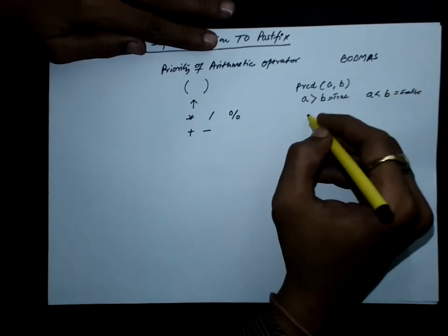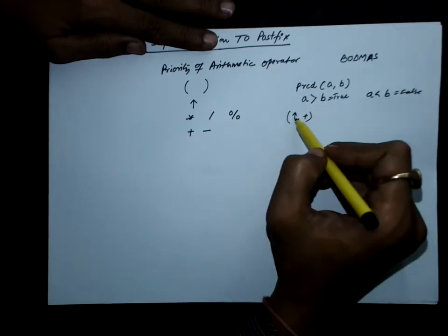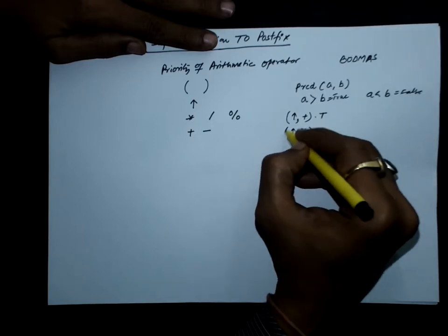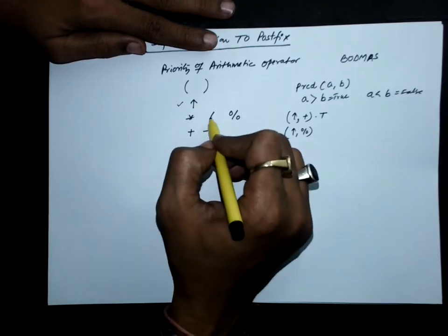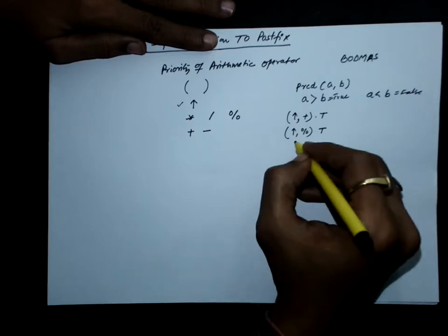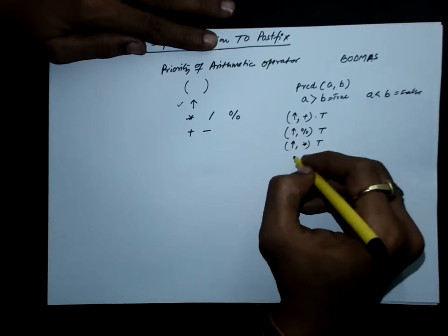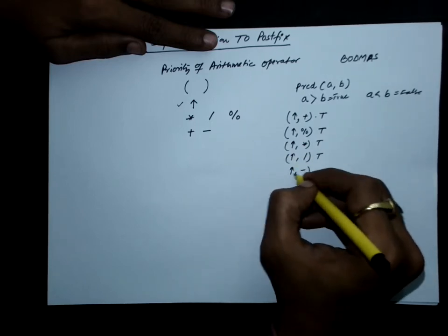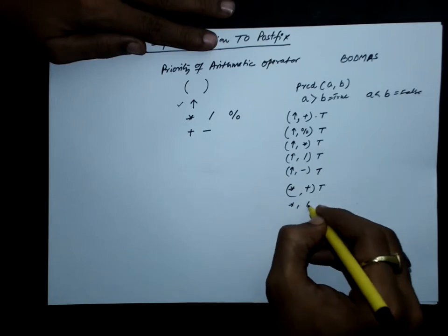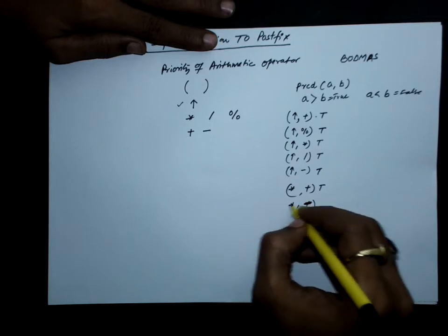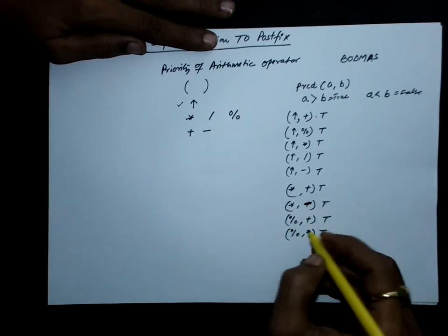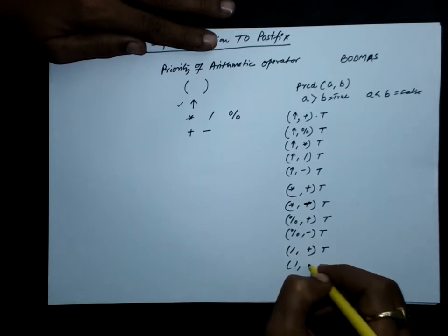For example, if we are checking the precedence of exponent over plus, exponent has higher precedence than plus, so this returns true. Checking exponent over modulus: exponent is the highest, and multiplication, division, and modulus have less precedence than exponent, so this is also true. Similarly, exponent over multiplication is true, exponent over division is true, and exponent over minus is true. Multiplication over plus is true, multiplication over minus is true. Modulus over plus is true, modulus over minus is true. Division over plus is true, and division over minus is also true.